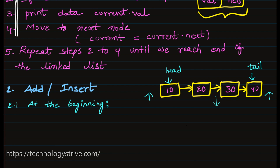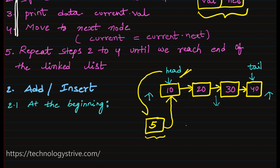To add a new node we need to provide the value. For example, given value 5, we create a node with that value. Once we create the new node it has to be part of our linked list, so we form a link. Because we are inserting at the beginning, the newly created node's next will become the current head node. Then because this is the first element, the head has to be changed from 10 to 5. Step 1: create new node. Step 2: newly created node's next is updated to the current head. Step 3: update head to the newly created node.